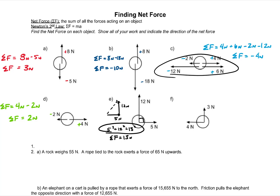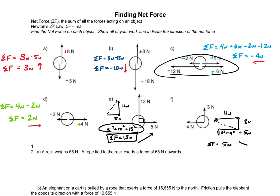Same thing for F. We build our triangle: 3 newtons up, 4 newtons over. The square root of 3 squared plus 4 squared gives 5 newtons. So the net force is 5 newtons, pointing up and to the right.